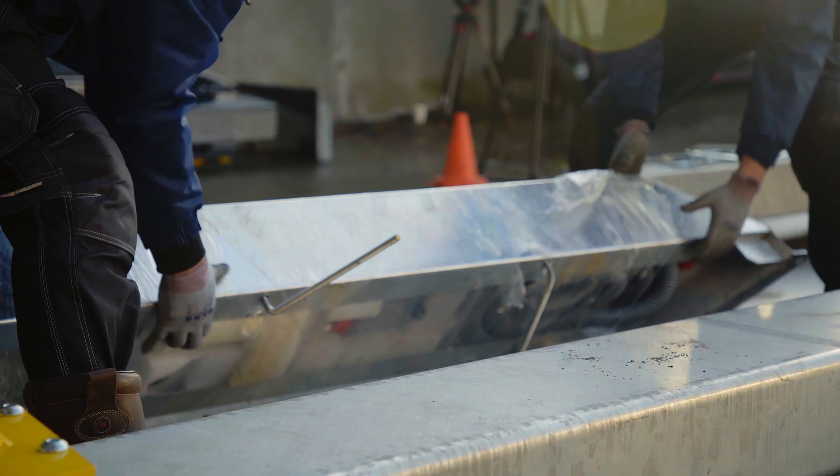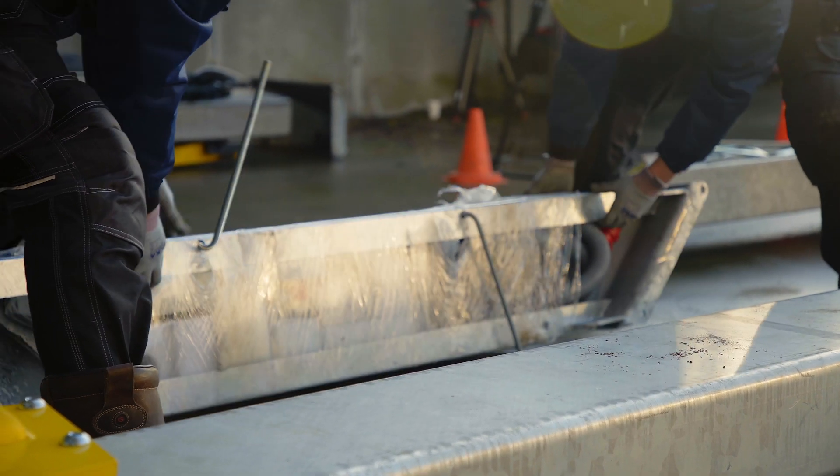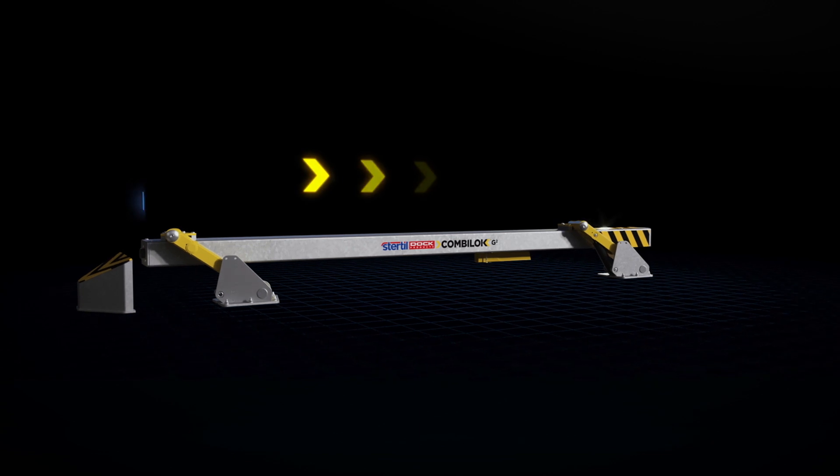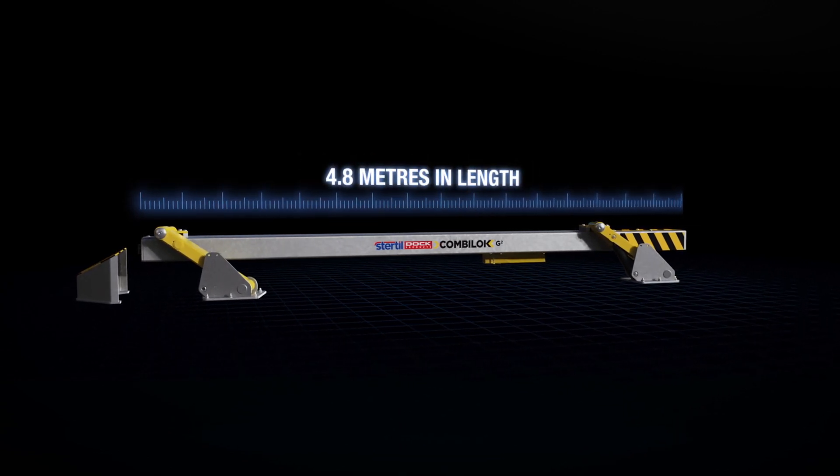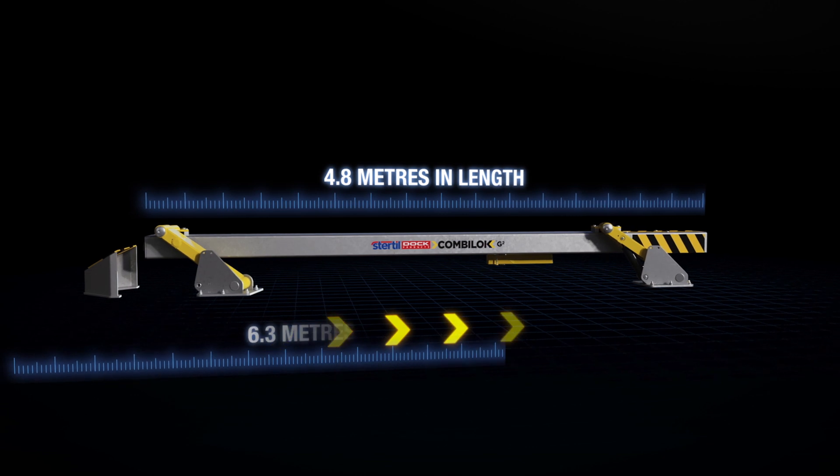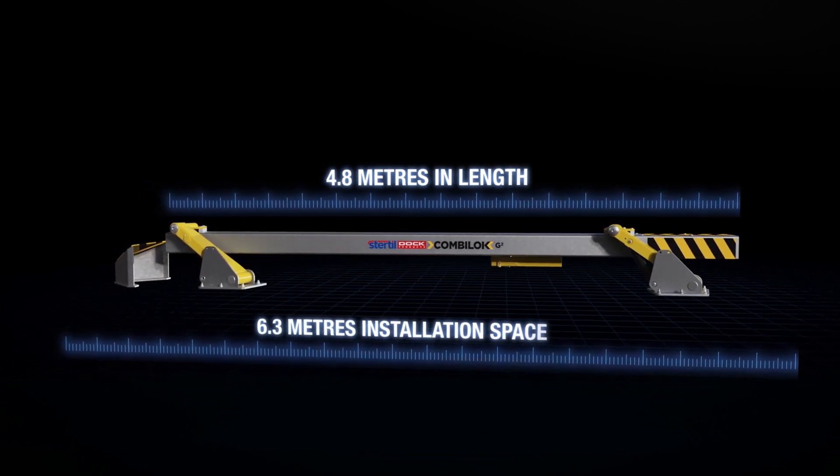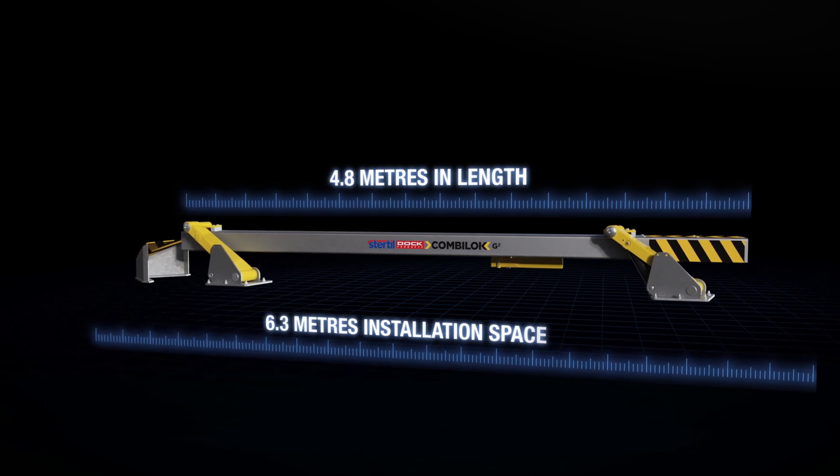It is transported using limited packaging and is installation ready once delivered. The CombiLock G2 measures 4.8 meters in length and only requires approximately 6.3 meters installation space. It is one of the most space-saving automated vehicle restraint systems on the market.